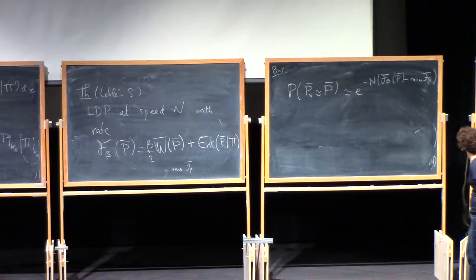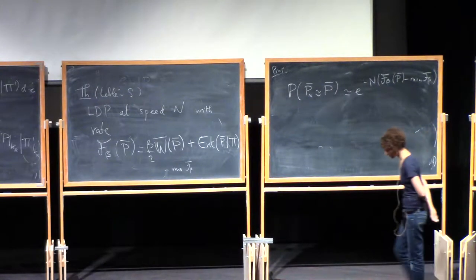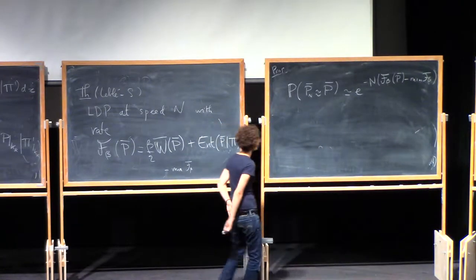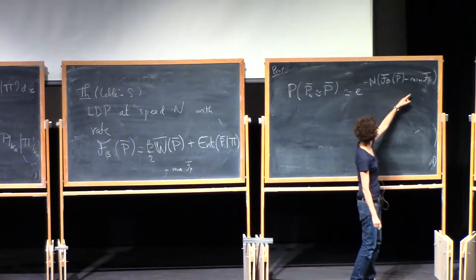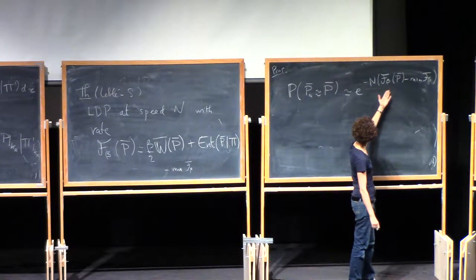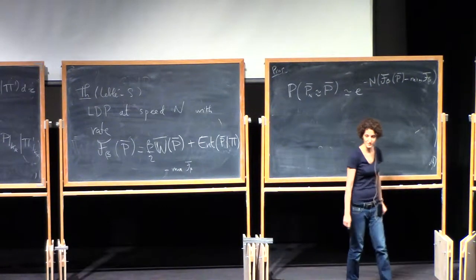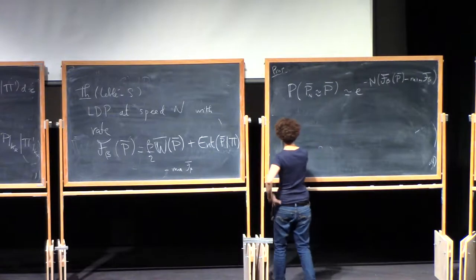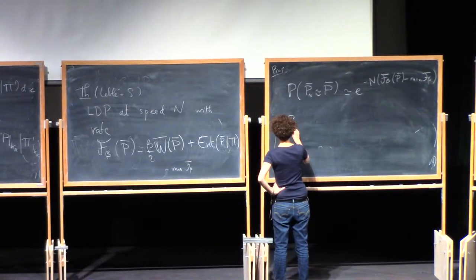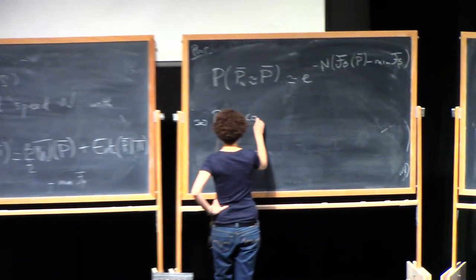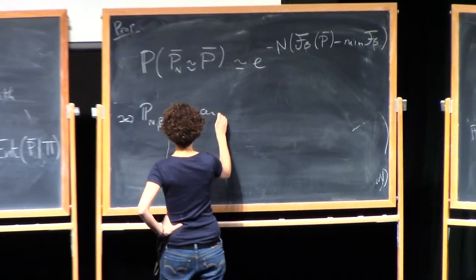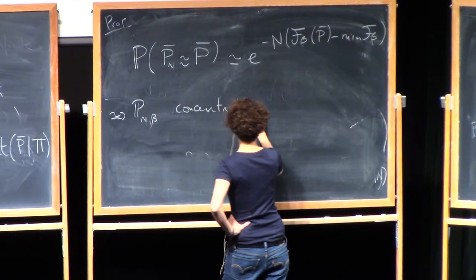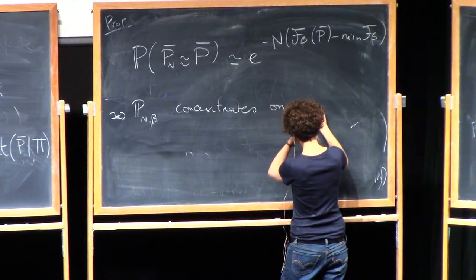As a consequence, everything that's not a minimum will have exponentially small probability. And so it means that the Gibbs measure concentrates on minimizers of F_beta.